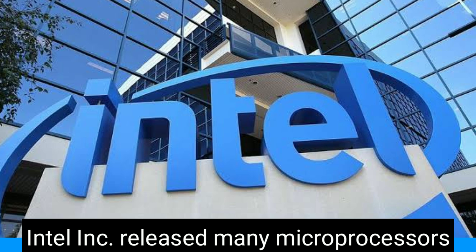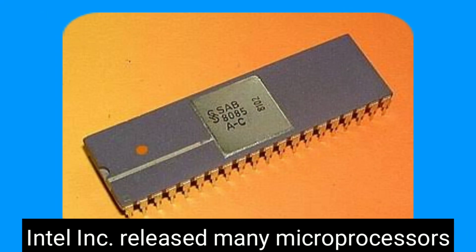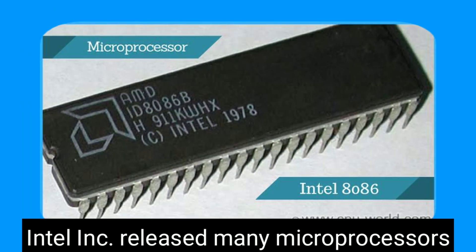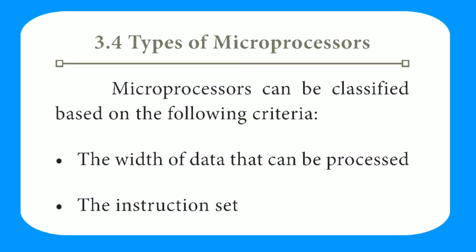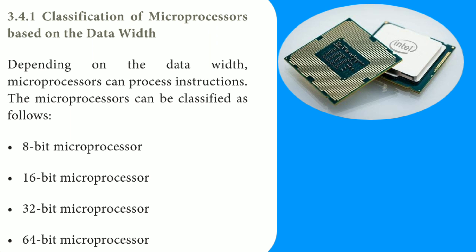Intel Incorporated later released many microprocessors like the Intel 8085, which is an 8-bit processor, and Intel 8086, which is a 16-bit processor, and so on. Currently most microprocessors use 32-bit or 64-bit architecture. Microprocessors can be classified based on two criteria: first, the width of data that can be processed, and second, the instruction set.